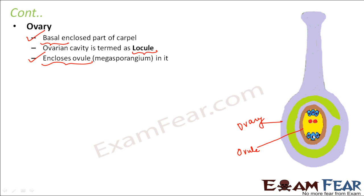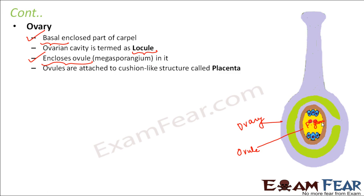Inside the ovules are present the female gametes, which are called ovum. There are also polar nuclei present, but we will cover those details in higher classes. For now, just remember that inside the ovule you have the female gametes. So in the male reproductive part, the male gametes are present inside the pollen sacs, and in the female part, the female gametes are present inside the ovule. The ovules are attached to a cushion-like structure inside the ovary called the placenta.